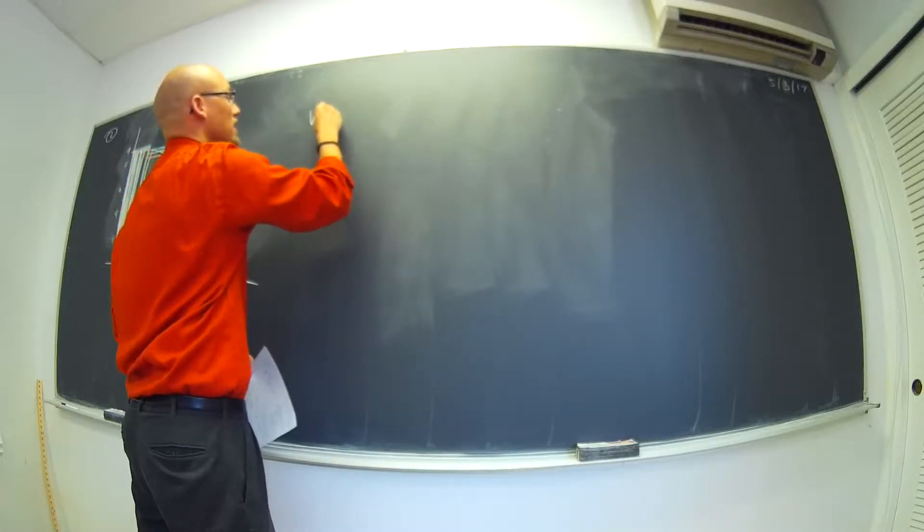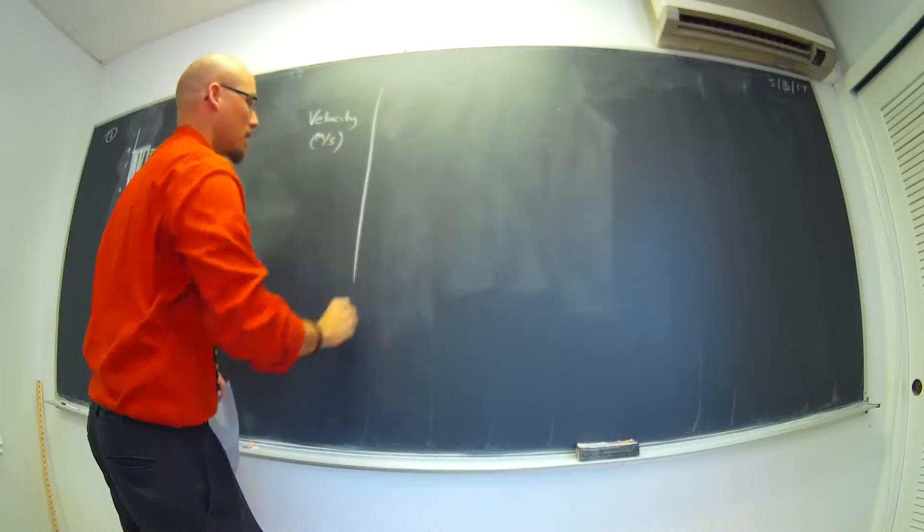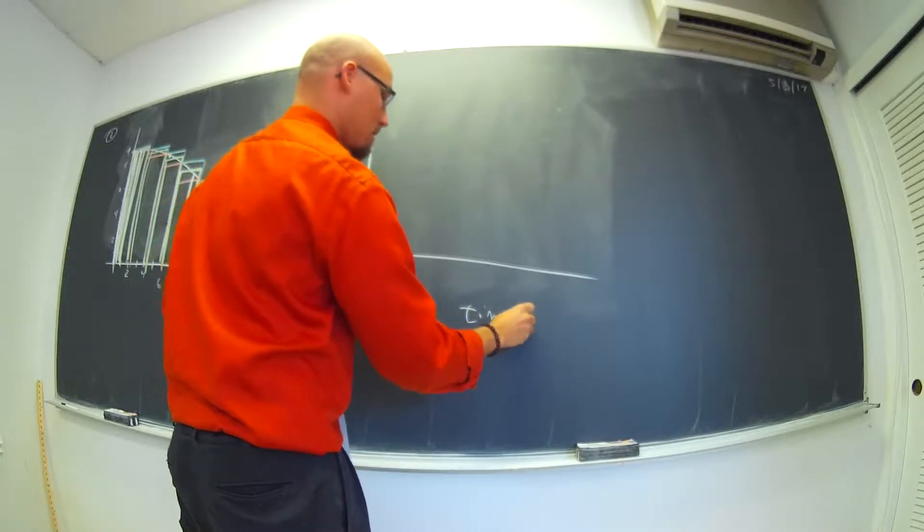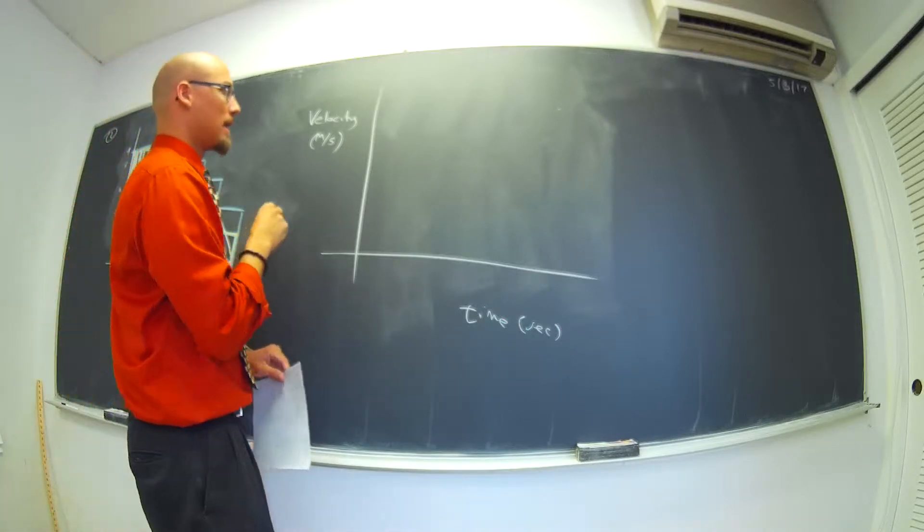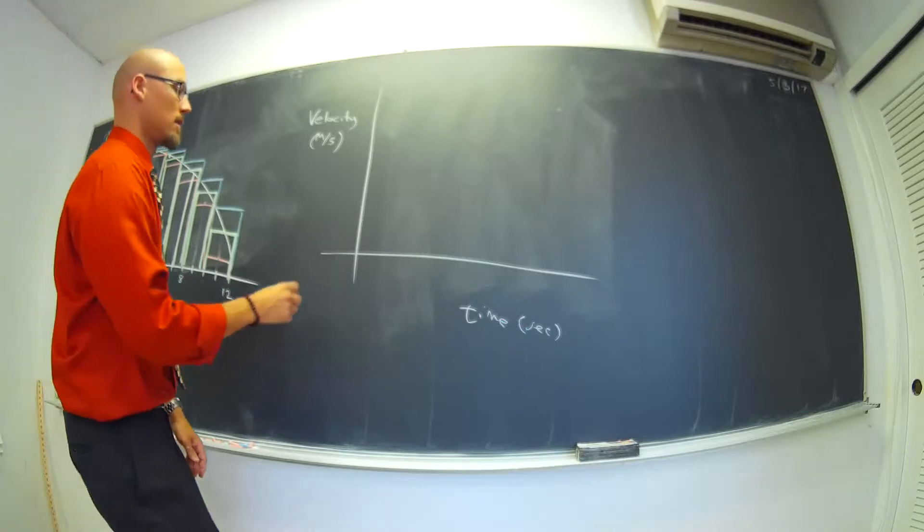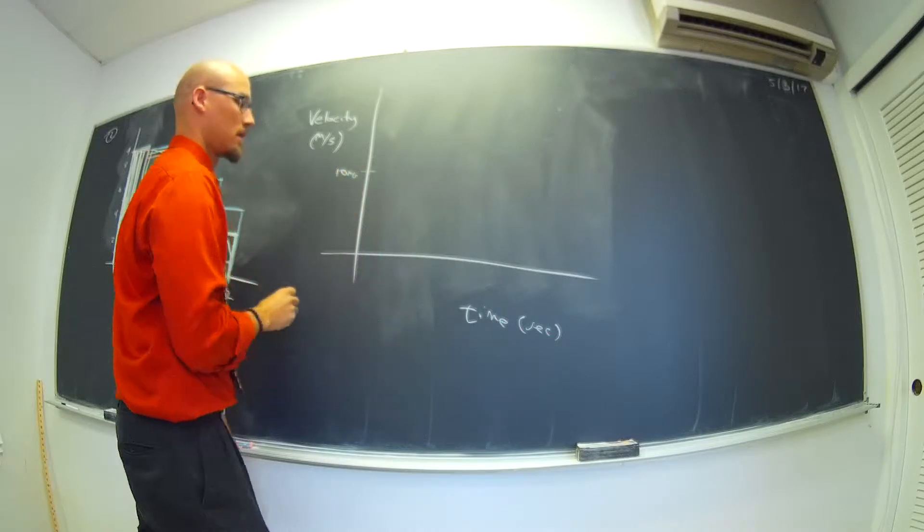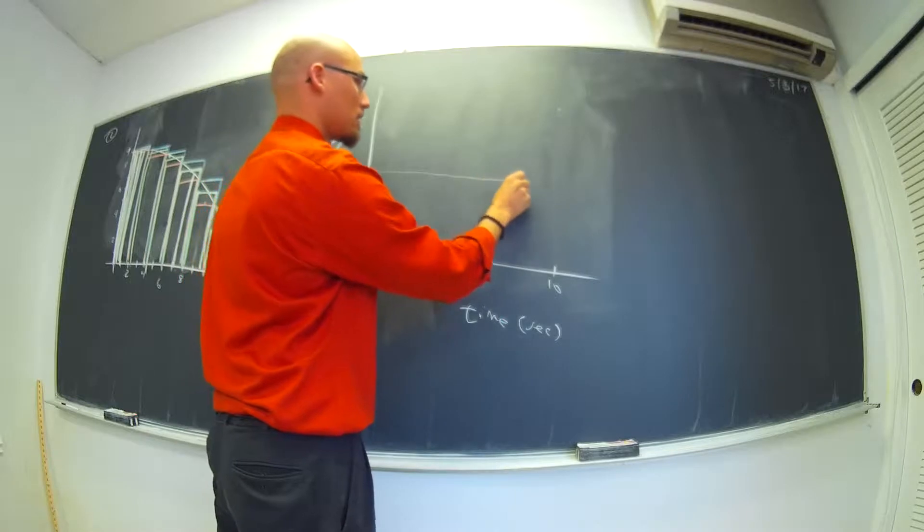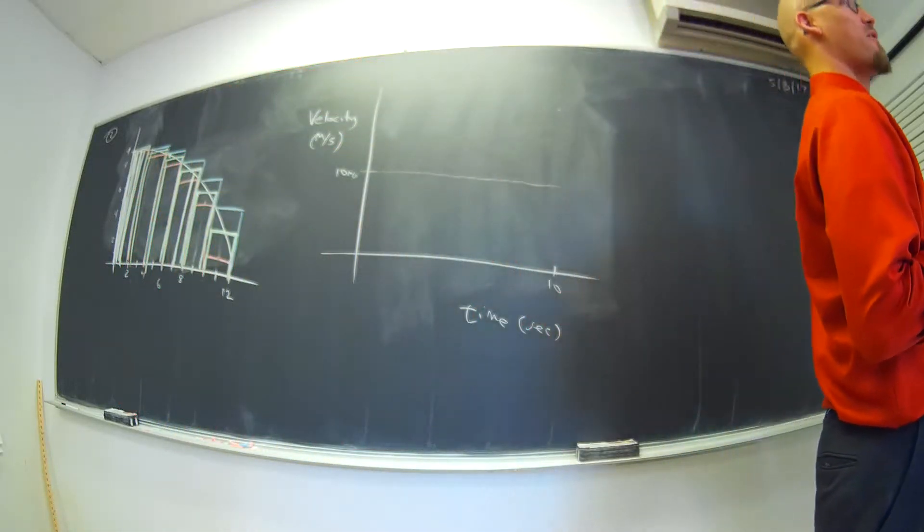Check this out. If we have a velocity, if we know the velocity in meters per second of a thing, and the time that it's traveling, the time in seconds, and let's say you're going 10 meters per second for 10 seconds. Constant velocity. If you go 10 meters per second for 10 seconds, how far did you go?